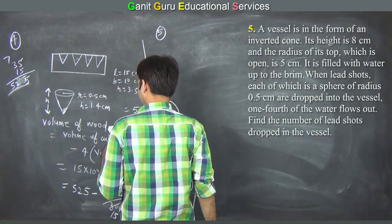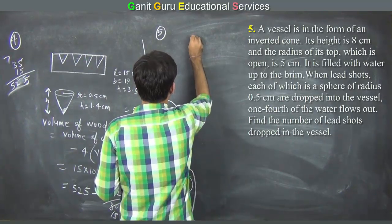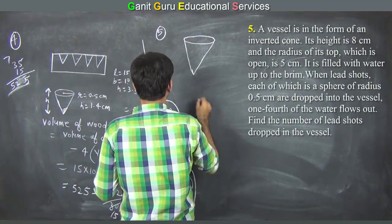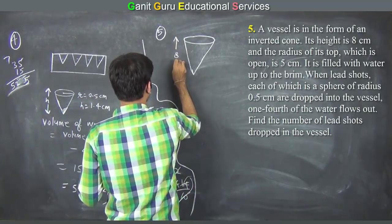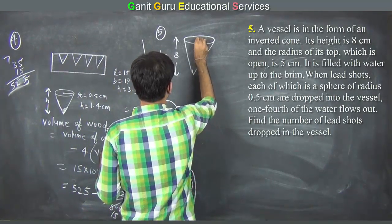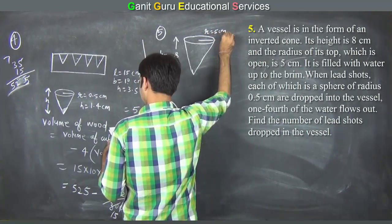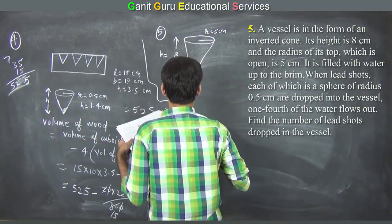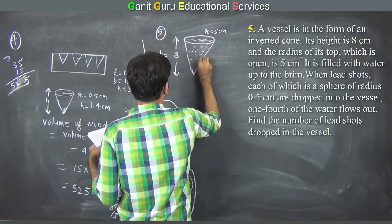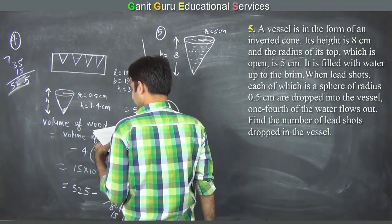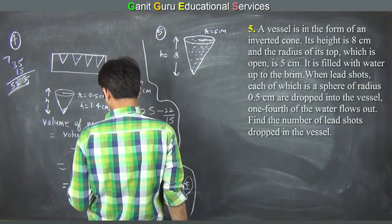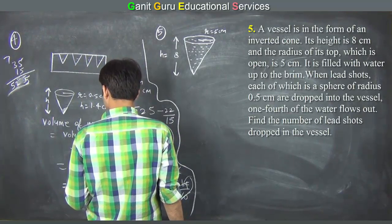Question 5: A vessel is in the form of an inverted cone. Its height is 8 cm and the radius of the top, which is open, is 5 cm. It is filled with water up to the brim. When lead shots, each of which is a sphere of radius 0.5 cm, are dropped into the vessel, one-fourth of the water flows out. Find the number of lead shots dropped in the vessel.